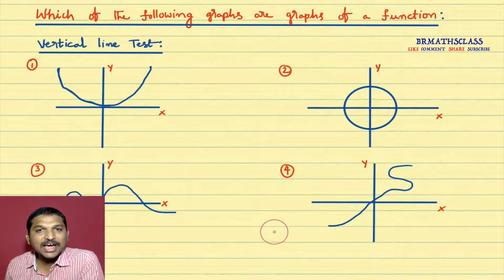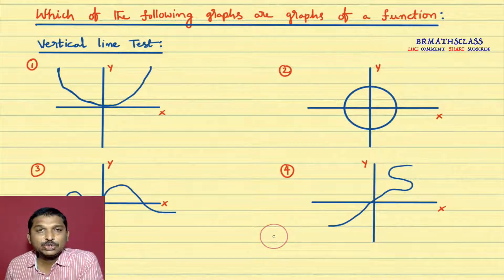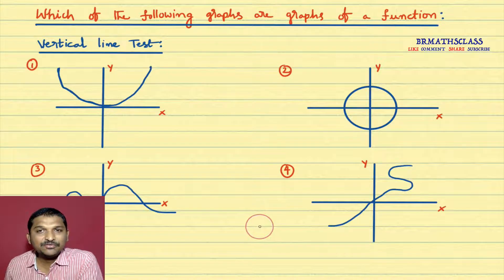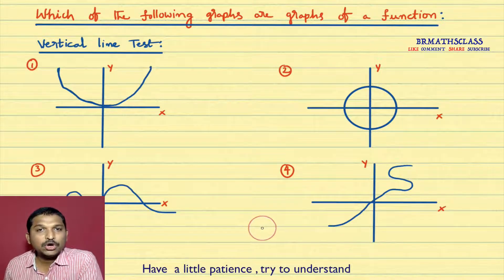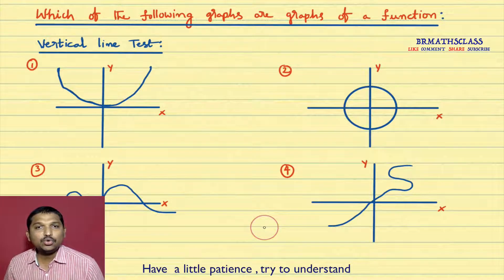Hi friends, I am Balaji Rao. Welcome to BRMAX class. In the previous class, we learned the vertical line test to check whether a given relation is a function or not. I felt that video was a little long, so I'm going to do a short video showing a shortcut for how we check if a given relation is a function or not.